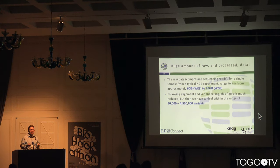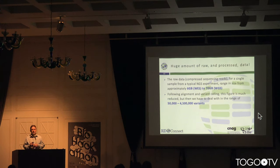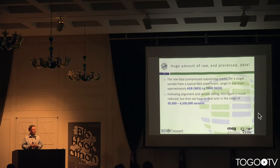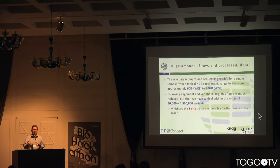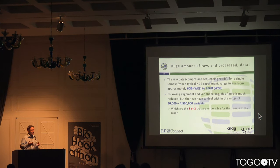Even once we've processed the data to a large extent, what the researchers or clinicians are dealt with initially is a list of variants that can range from 50,000 for a small exome to 4.5 million if they've done a complete genome. And from this they are trying to discover — and we are trying to help them discover — the single or pair of variants responsible for the disease their case has.